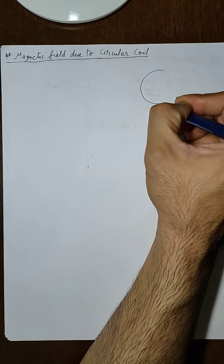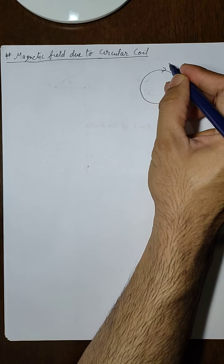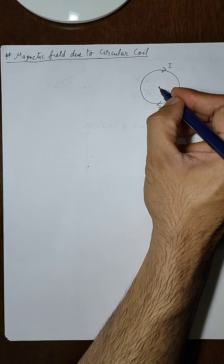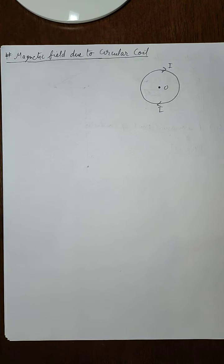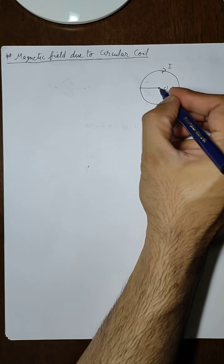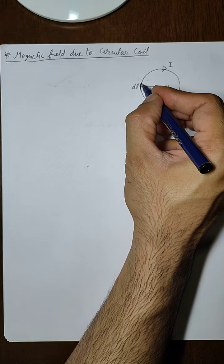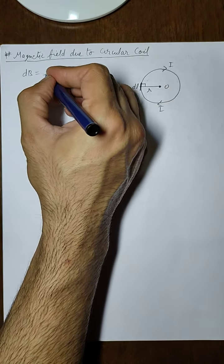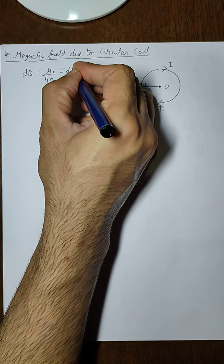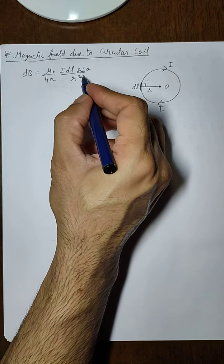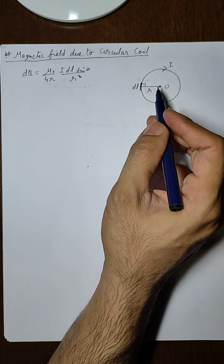In this video we are going to apply the same concept from the last video — where we had a straight conductor and took a length element dl and integrated it — but now to a circular coil. Here we have a circular coil in which a current i is flowing, and this is point O. We take the same length element dl; the angle between dl and r will be 90 degrees. By Biot-Savart's law, dB equals μ₀/4π · (i dl sinθ)/r², and here θ = 90°.